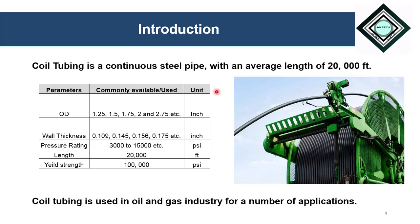Coil tubing is a versatile technology used in the oil and gas industry for a number of applications. The most common applications include nitrogen kickoff, matrix stimulation, perforation wash, cement plug, coil tubing milling, perforation with coil tubing, and even drilling of a well.